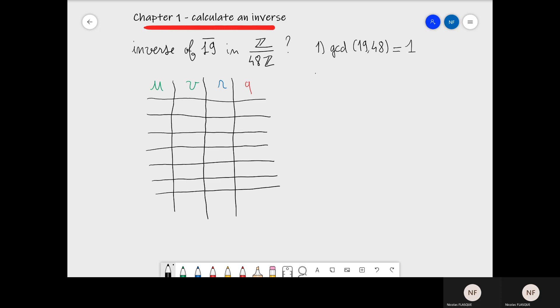Here A is equal to 19 and N is equal to 48. Remember that we are looking for a U, V couple such that A, which is 19 times U, plus N, which is 48 times V, is equal to 1. In the R column, we always begin with the greatest number, which is 48, and the other is 19.